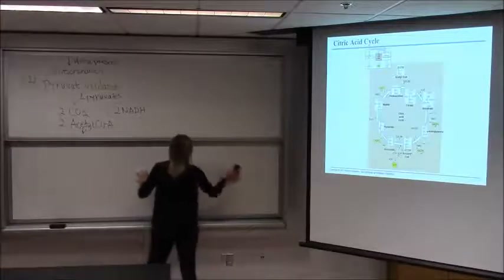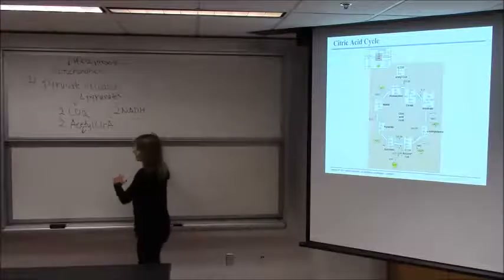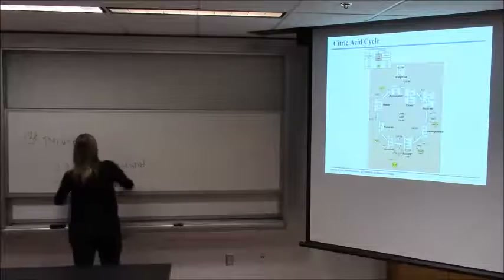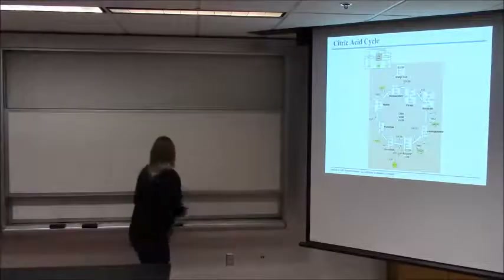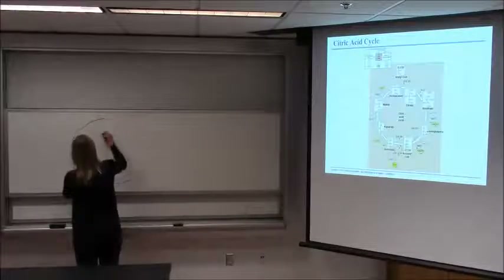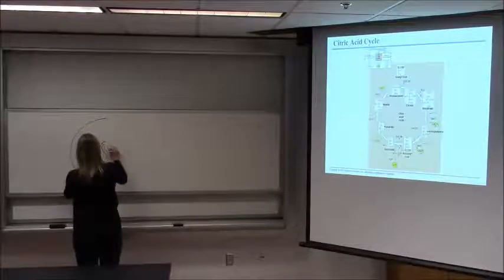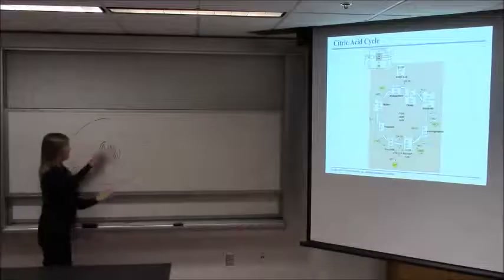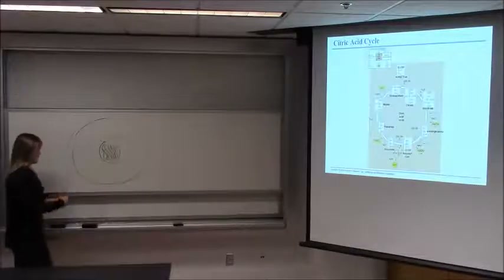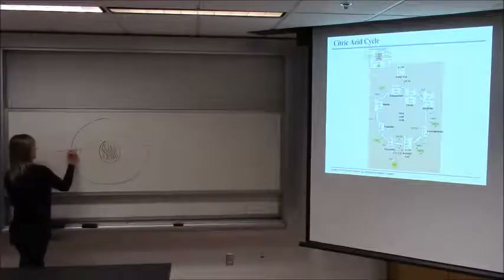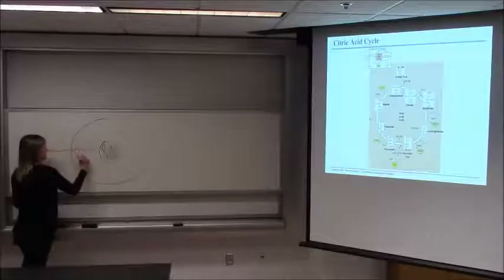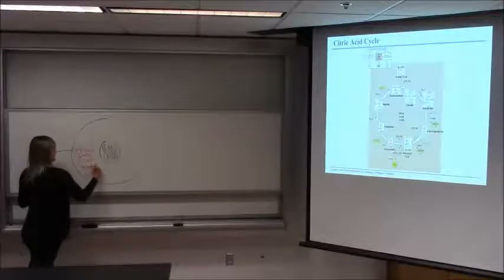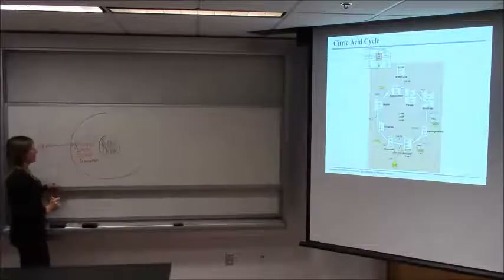I'm going to draw a cell and a mitochondrion because it's important to understand where this is all taking place to understand the electron transport chain. Here's our cell, here's the nucleus, and the cytoplasm. Remember, glycolysis took place out here in the cytoplasm after glucose entered, and we generated two ATP and two NADH. Then those two pyruvate that we made, if there's enough oxygen present, are going to enter a mitochondrion.